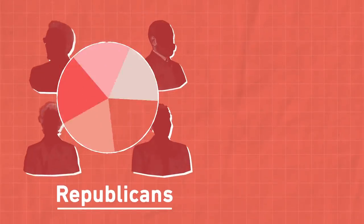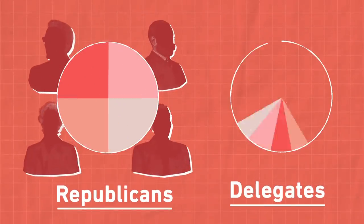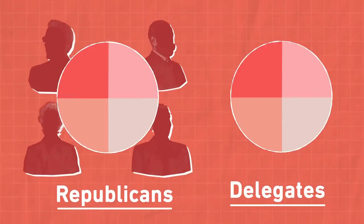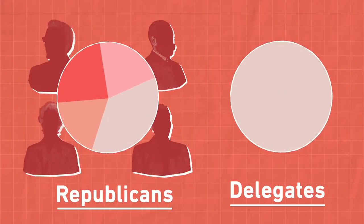On the Republican side, it's largely winner-take-most. If the person who has the most votes in a given state only got 30% of the vote, they could still get all the delegates.